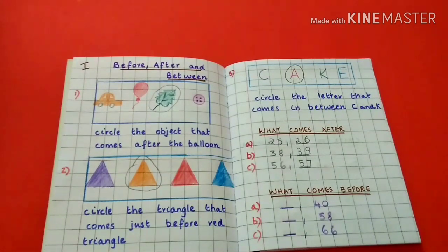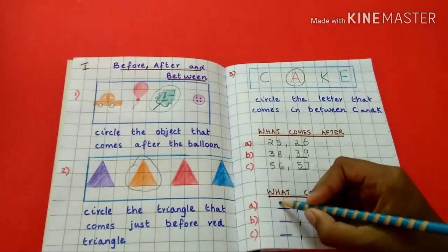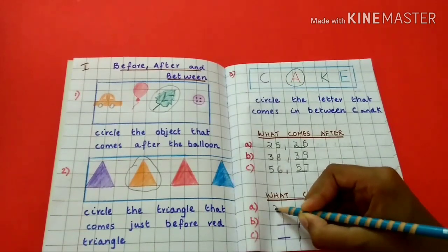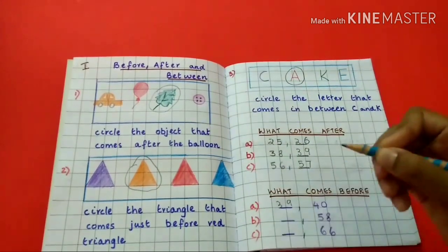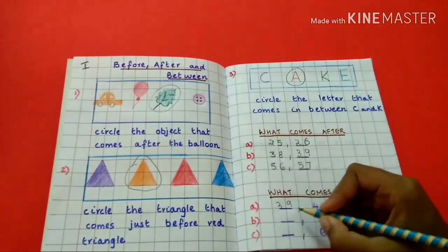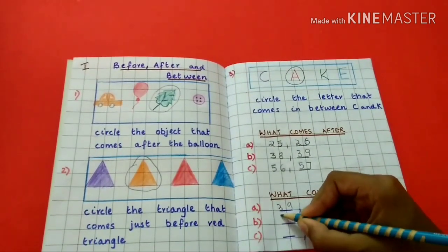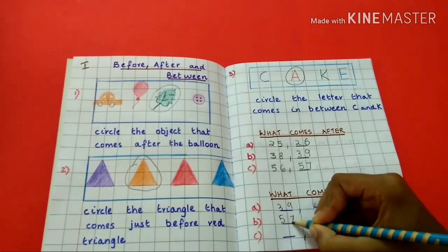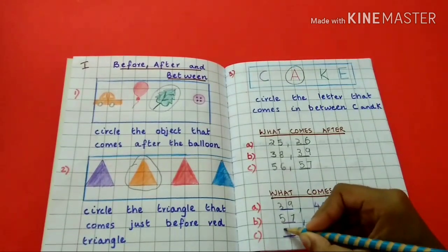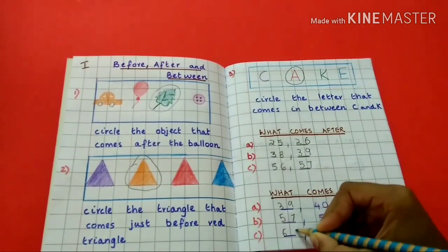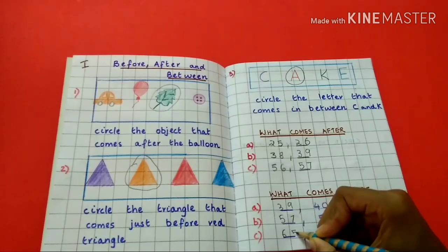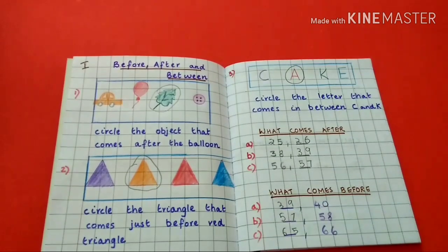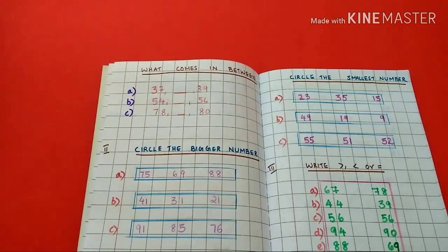What comes before? 34. 39 — 38. 40. 57 — 56. 65 — 64. 66. What comes in between?